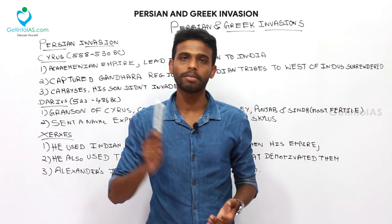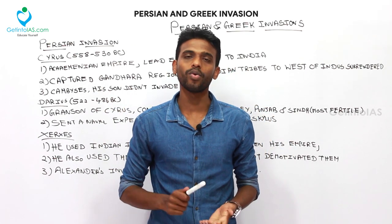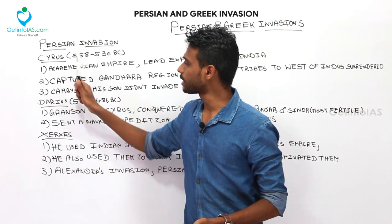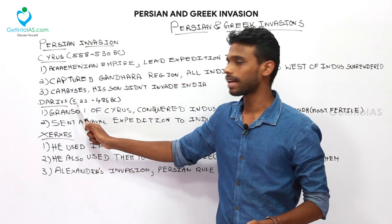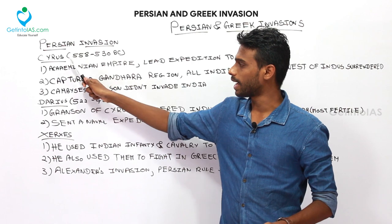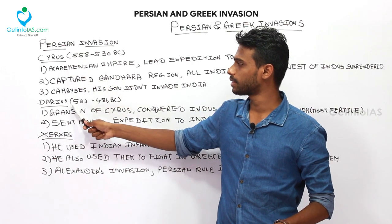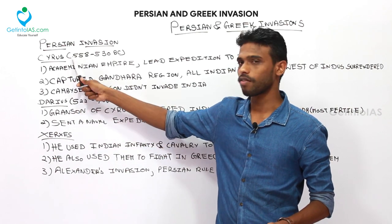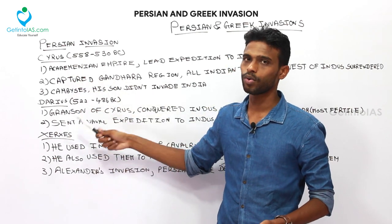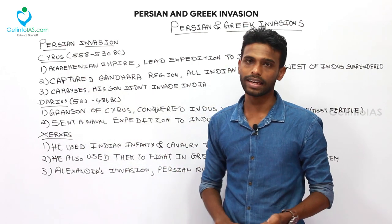There were some Persian kings who invaded India and captured certain territories: Cyrus, Darius, and Xerxes. Darius is the grandson of Cyrus, and Xerxes is the one who dethroned Darius.